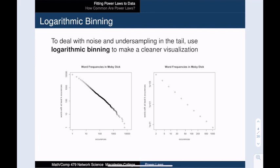Let's start by talking about one way to make a cleaner visualization. Our goal will be to compensate for the undersampling in the tail of the distribution. We will use a technique called logarithmic binning. This slide shows two log-log visualizations of the word frequencies in the novel Moby Dick. The plot on the right uses logarithmic binning to aggregate data points in a similar range.